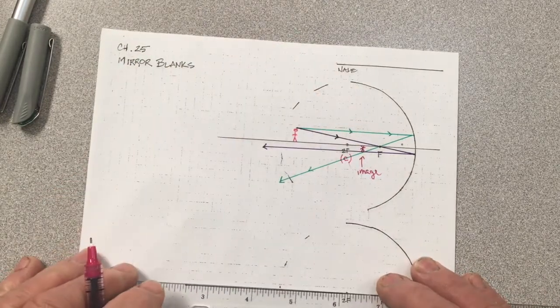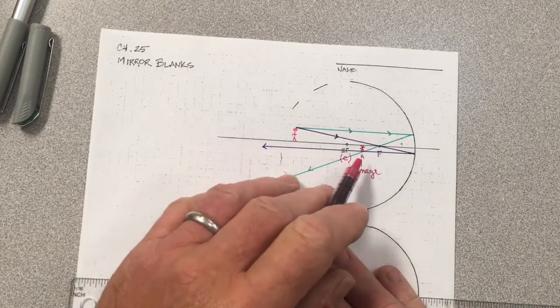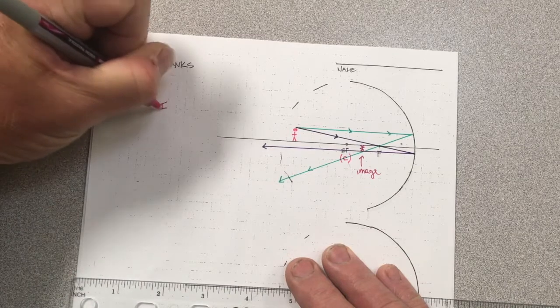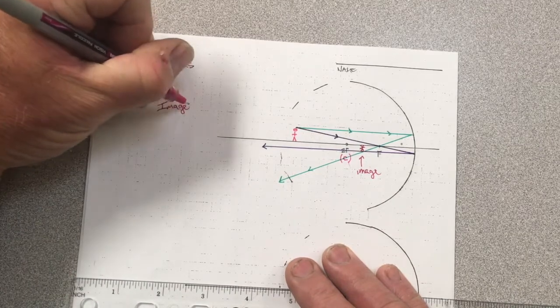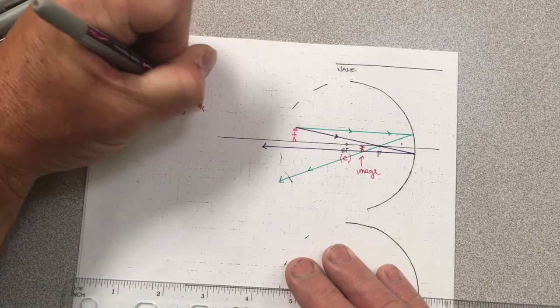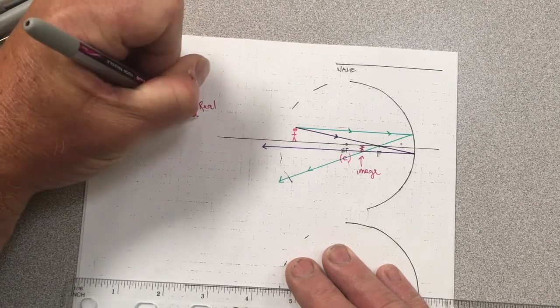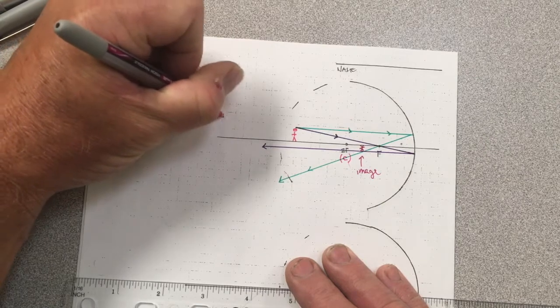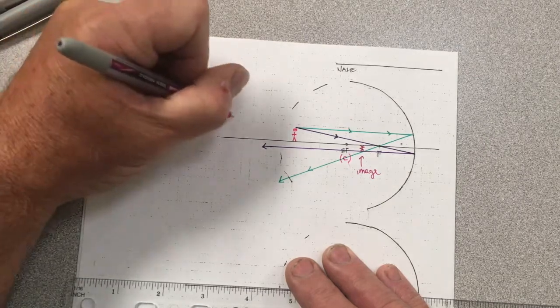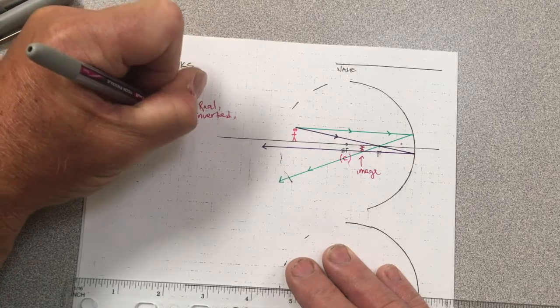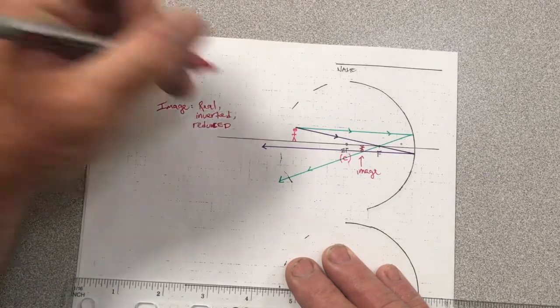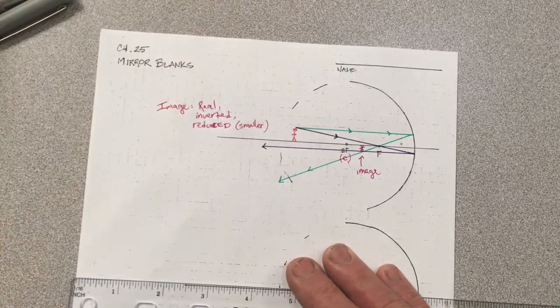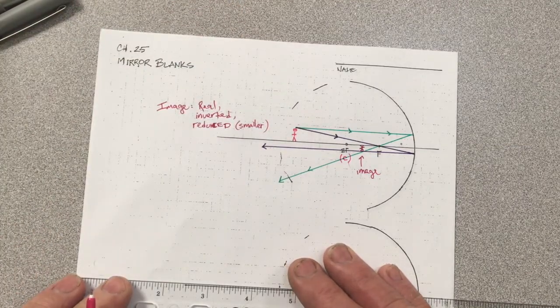This image we can actually show you with a piece of paper, it's really right there, it is real. The words we use to describe this image of course is real, inverted or upside down, and it is reduced in size or you might say smaller. But let's get used to all the vocabulary that we need to know conceivably.